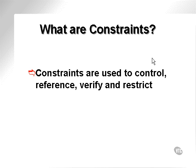What are constraints? How are they used? Constraints are used to control, reference, verify, and restrict. By restrict, we mean a value is allowed to only be certain values. By verify, we can check something. By reference, it means we cross-reference between different items.